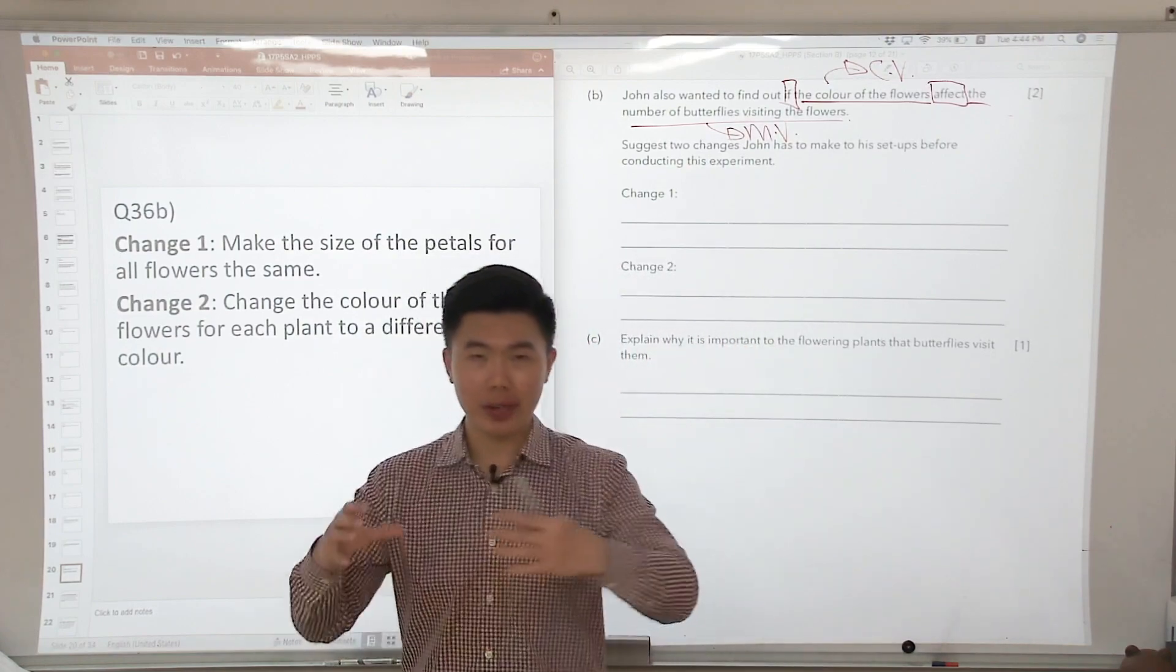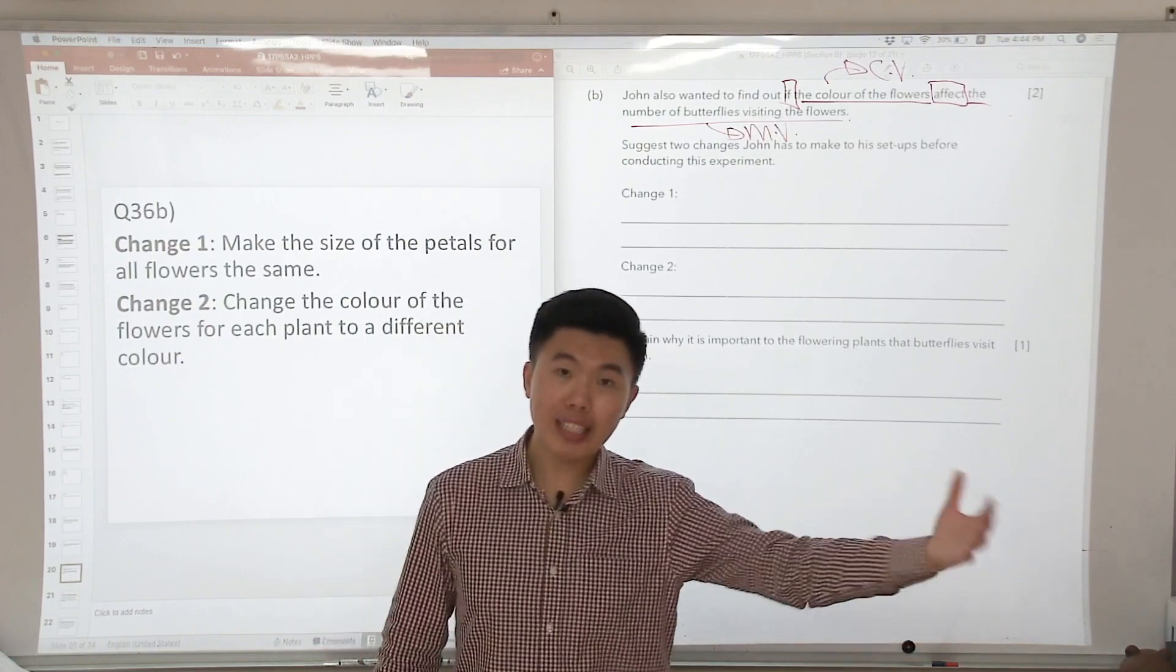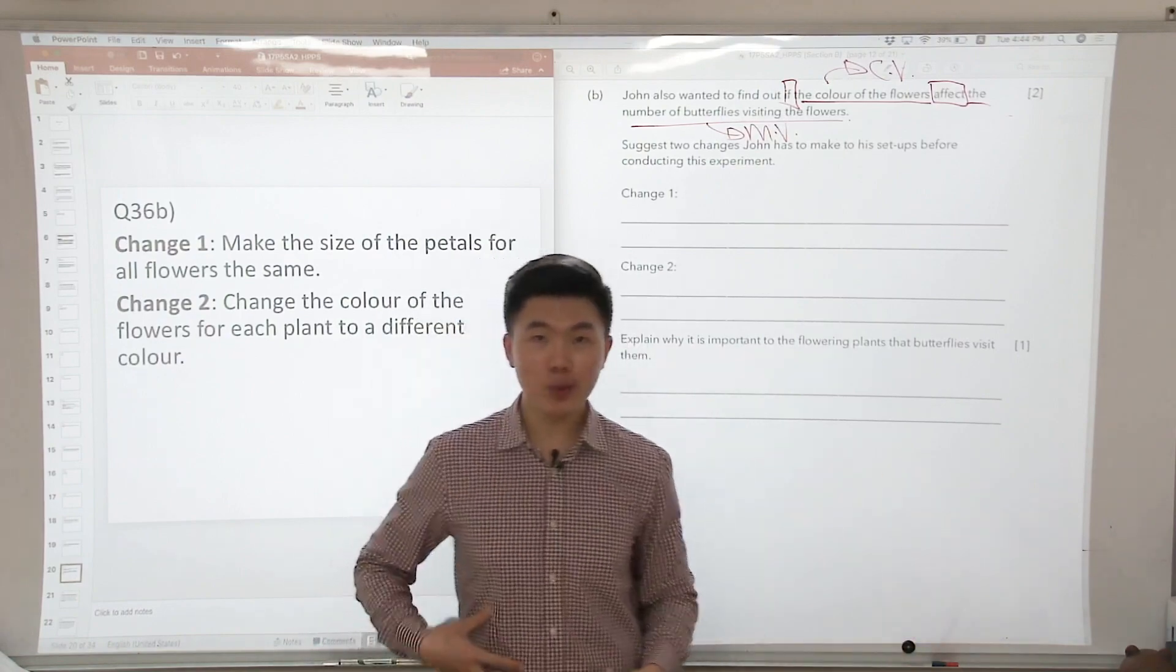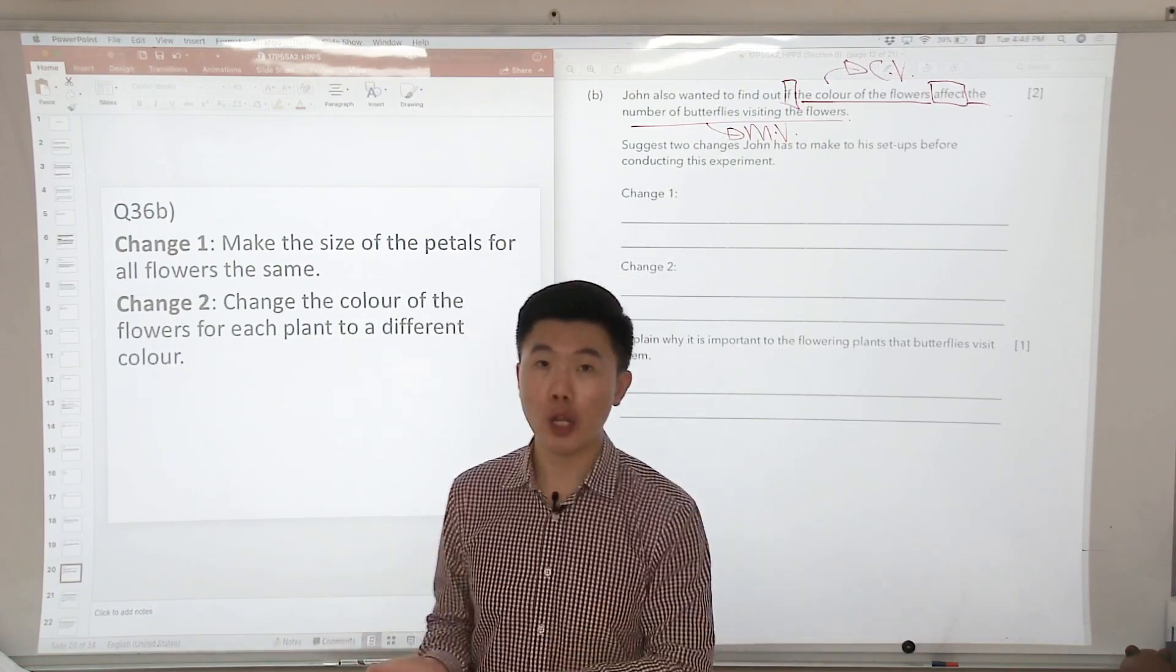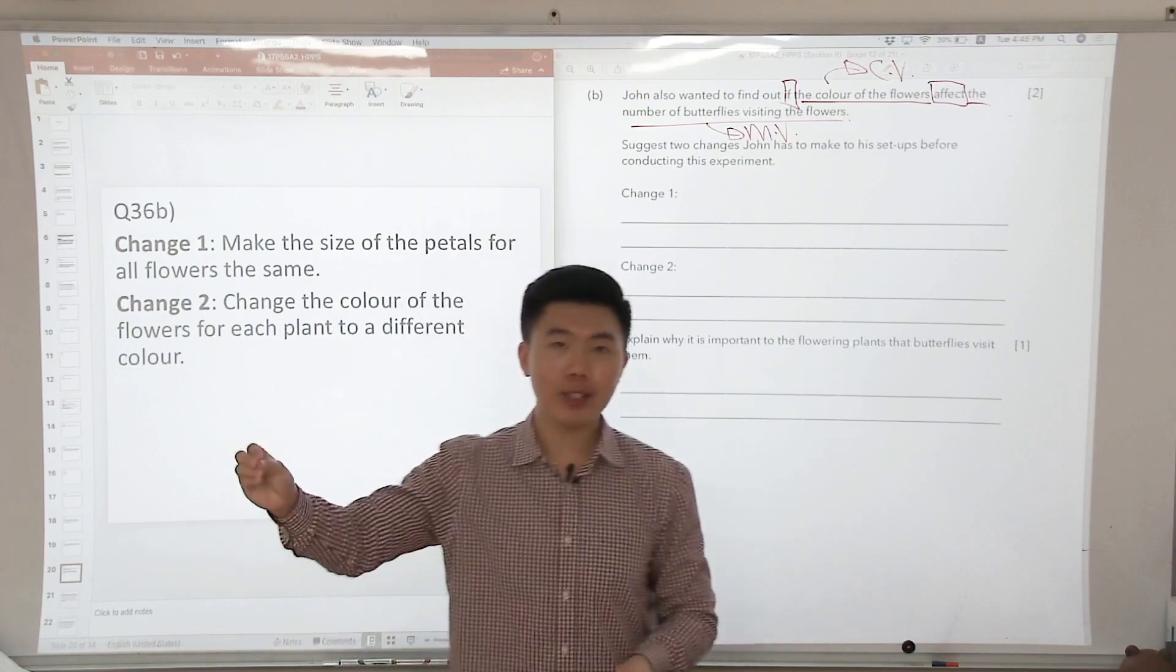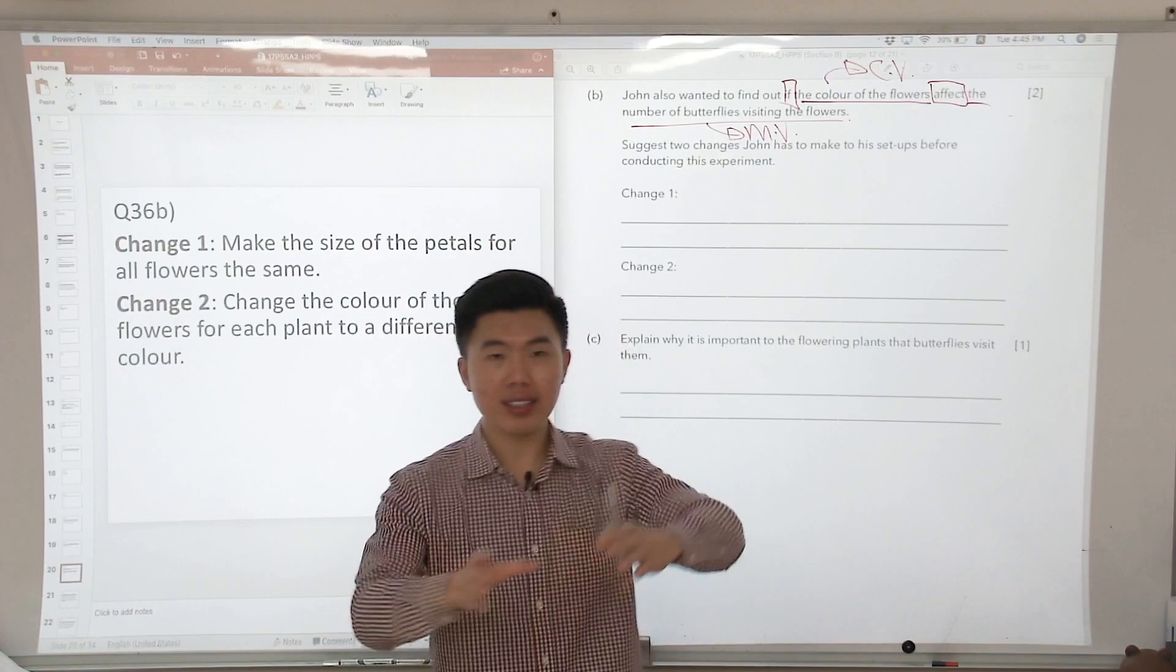Pollinators are animals or insects that visit the flower, and when they visit the flower, usually it is to obtain nectar. Their bodies will rub against the anthers. The anthers are the parts that produce and store the pollen grains. So the pollen grains from the anther will then stick onto the insect's body, and when the insect visits another flower of the same species, the pollen grains will then land on the stigma in the process of pollination.